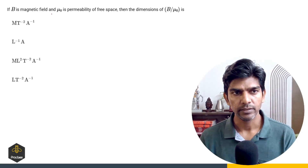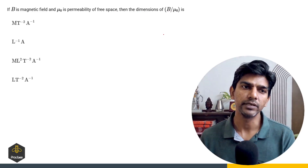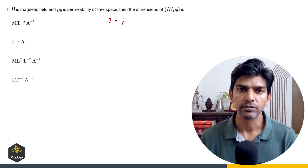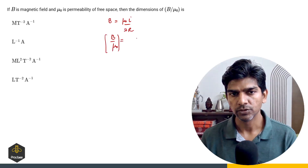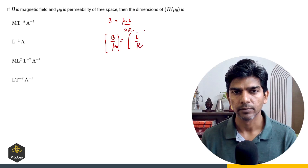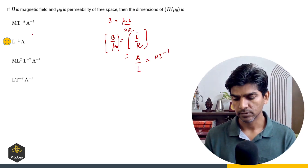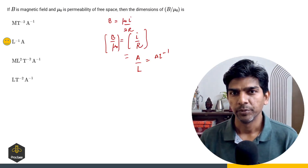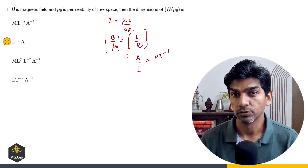If B is the magnetic field and μ₀ is the permeability of free space, then the dimension of B by μ₀ is found using the formula B equals μ₀·I upon 2R. So dimension of B by μ₀ equals dimension of I by R, where I is current (A) and R is radius (L), giving A·L raised to power minus 1. So option 2 is the right answer. We are done with the questions based on units and dimensions asked in January. In the next video, I am going to discuss questions from gravitation.